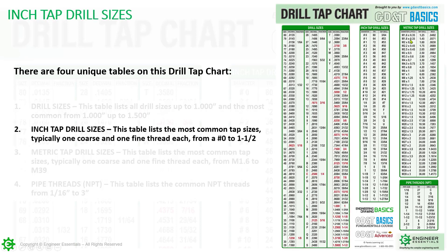The second table is the inch tap drill sizes. If you're looking for an inch size, go to this second table — it's labeled 'inch' at the very top. This table is going to be the most common tap sizes, typically one coarse and one fine thread for each size, ranging from a number zero all the way up to inch and a half.